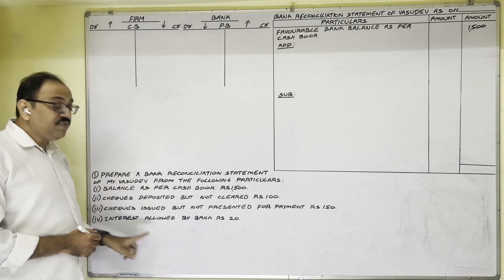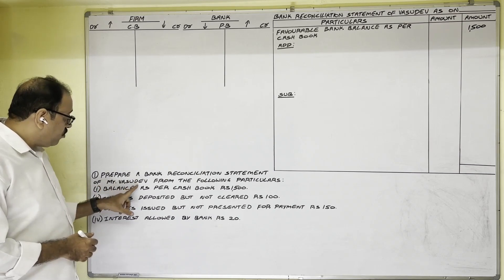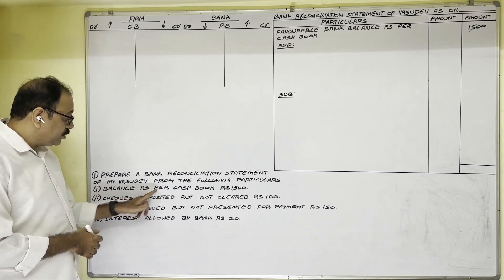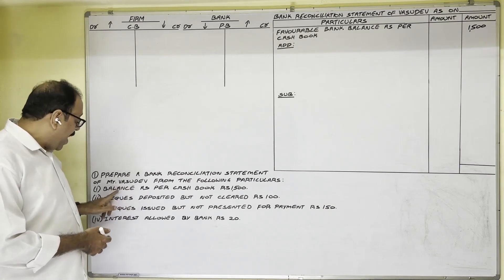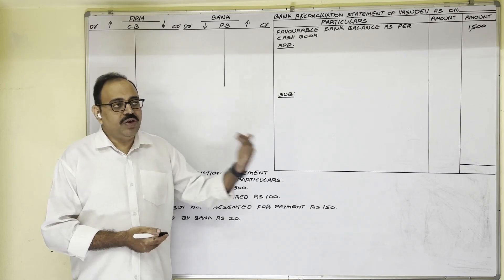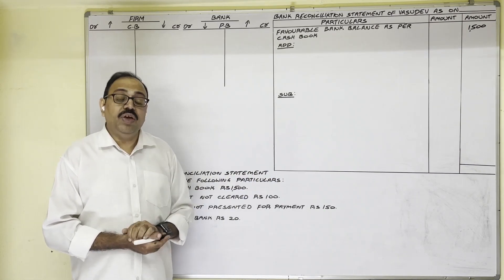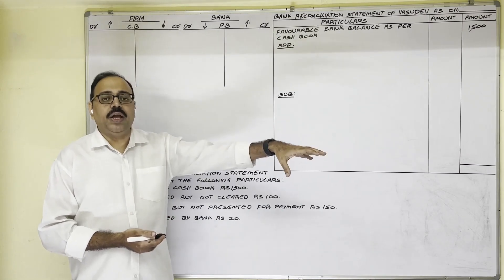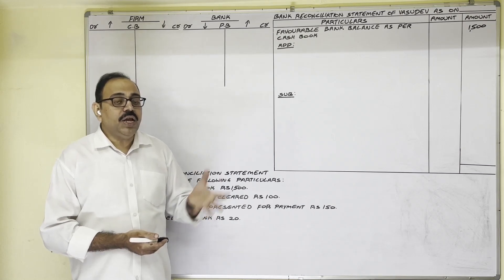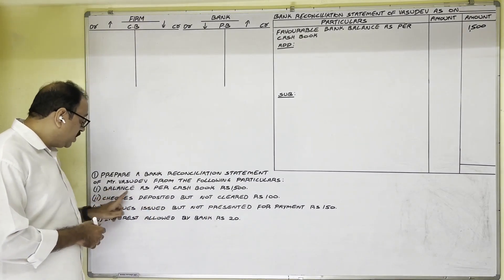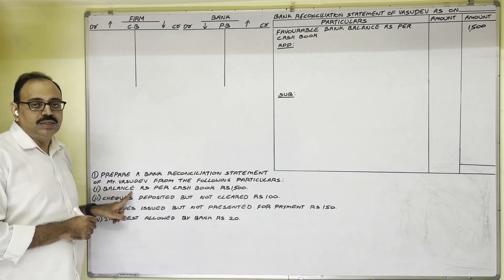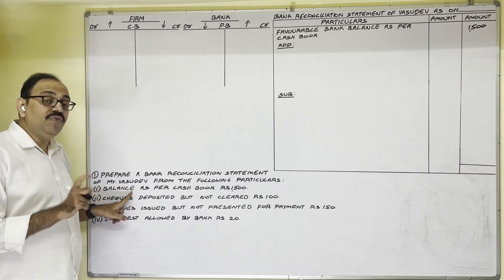Let us see the question: Prepare a bank reconciliation statement of Mr. Vasudev from the following particulars. The first point is balance as per cash book — 1500 rupees. Here 'balance' means bank balance. Bank balance is of two types: favorable bank balance and unfavorable bank balance. Unfavorable bank balance is also known as bank overdraft balance. In the absence of proper information, our assumption is that this is a favorable bank balance.